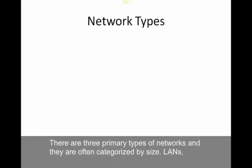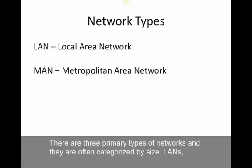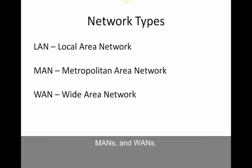There are three primary network types: a LAN (local area network), a MAN (metropolitan area network), and a WAN (wide area network), and they're categorized by size. A local area network would be a home network or a small office. A metropolitan area network might be a city or a campus, and a wide area network might cover multiple campuses, multiple cities, regions, states, or countries. The largest WAN in existence is the internet, because all of the computers on the internet are connected.